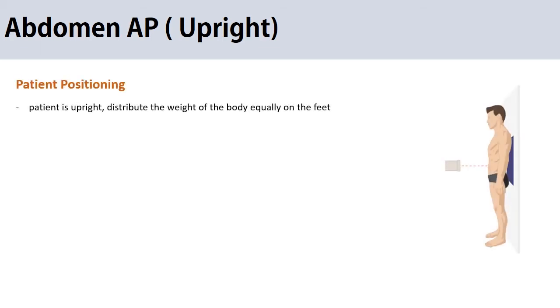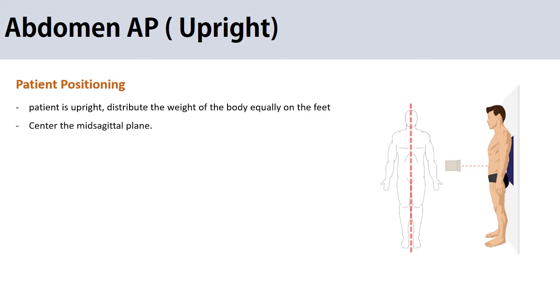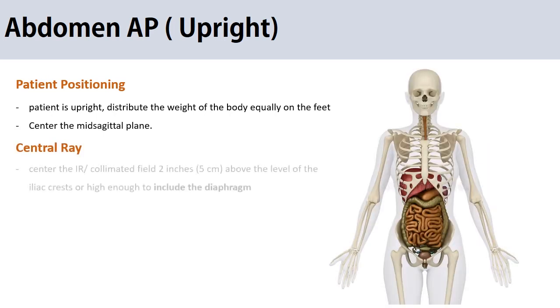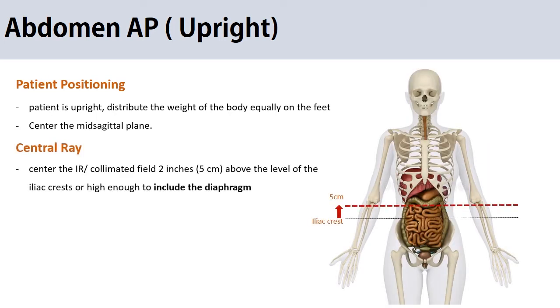The only difference from the supine position is the central ray. Have the patient stand erect in front of the image receptor with the weight of the body distributed equally on both feet. Center the mid-sagittal plane and adjust the CR 5 cm above the iliac crest, or high enough to ensure the diaphragm is included.